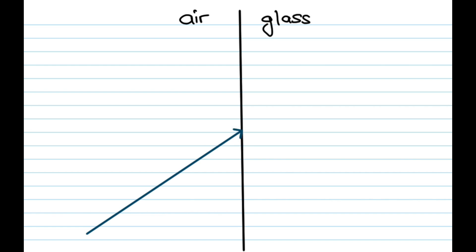So here we have our incident ray. And remember, the incident ray is the one that's coming in. Once you have your incident ray, the first thing that you want to do is you want to draw the normal. So 90 degrees or perpendicular to the surface.